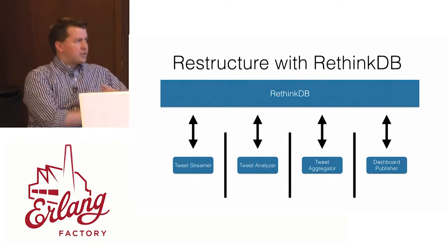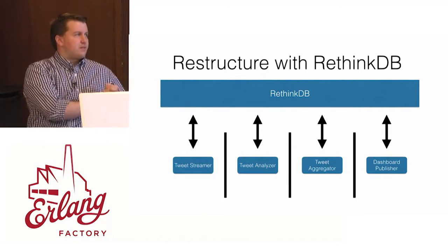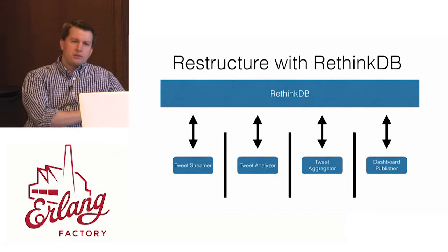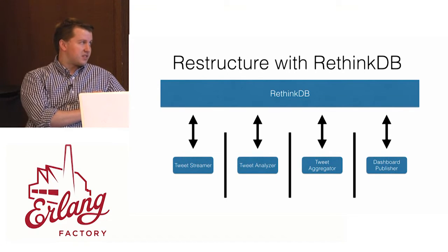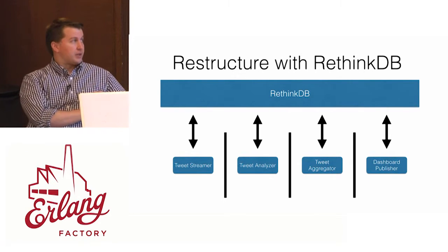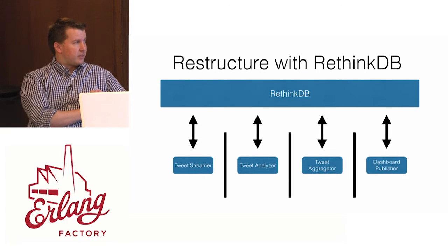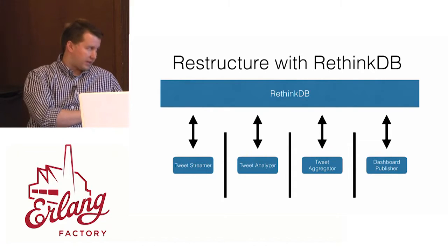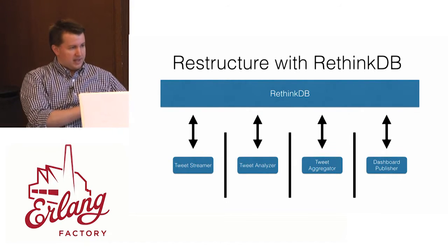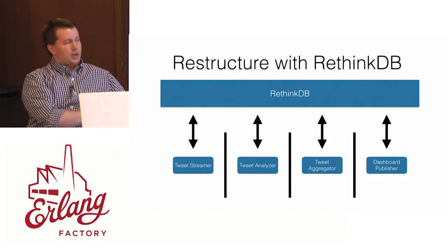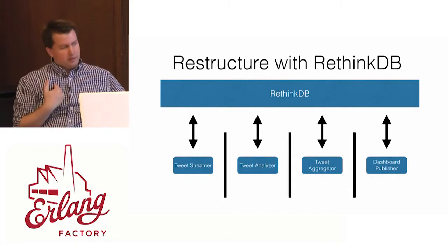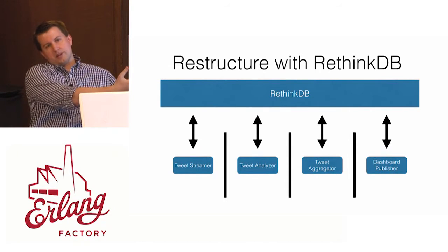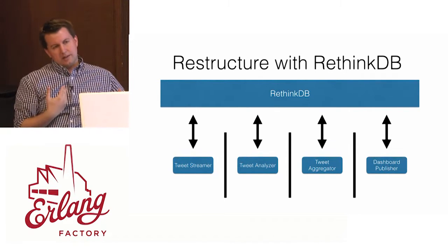I'd like to revisit our initial problem and solution using RethinkDB change feeds. What if each of these four stages was entirely independent — rather than consuming data directly from the previous stage, what if they merely interact with our database? The tweet streamer writes data to the database. The analyzer has a feed of data the streamer wrote, analyzes it, and writes it back. The tweet aggregator gets data from the database and writes it back. Then the dashboard publisher, every time a new dashboard is updated, receives an update and publishes it out.